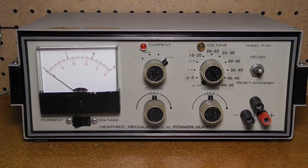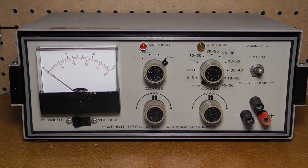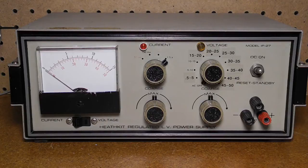The coarse voltage switch selects the output voltage in one of 10 ranges that each cover a 5 volt range over the full range from 0.5 to 50 volts. The fine voltage control adjusts the output voltage continuously within the selected range.